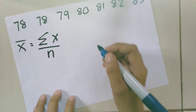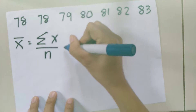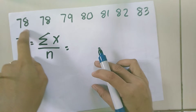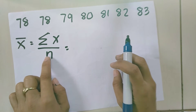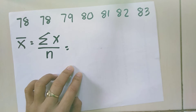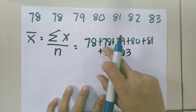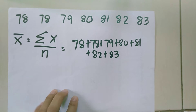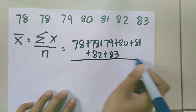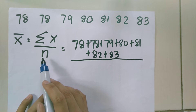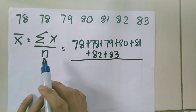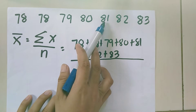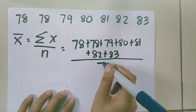Let us solve. Summation of x means we are going to add all our data. Let's add: 78 plus 78 plus 79 plus 80 plus 81 plus 82 plus 83. n is the number of how many data we have. Let's count: 1, 2, 3, 4, 5, 6, 7. So n is 7.